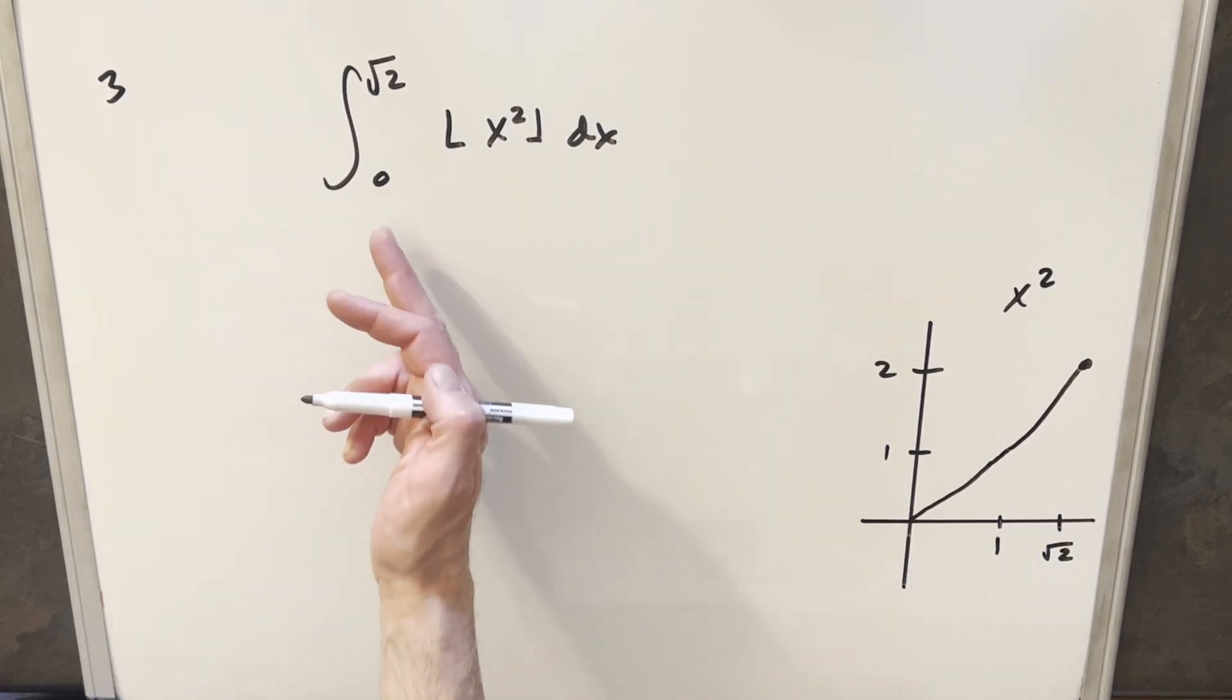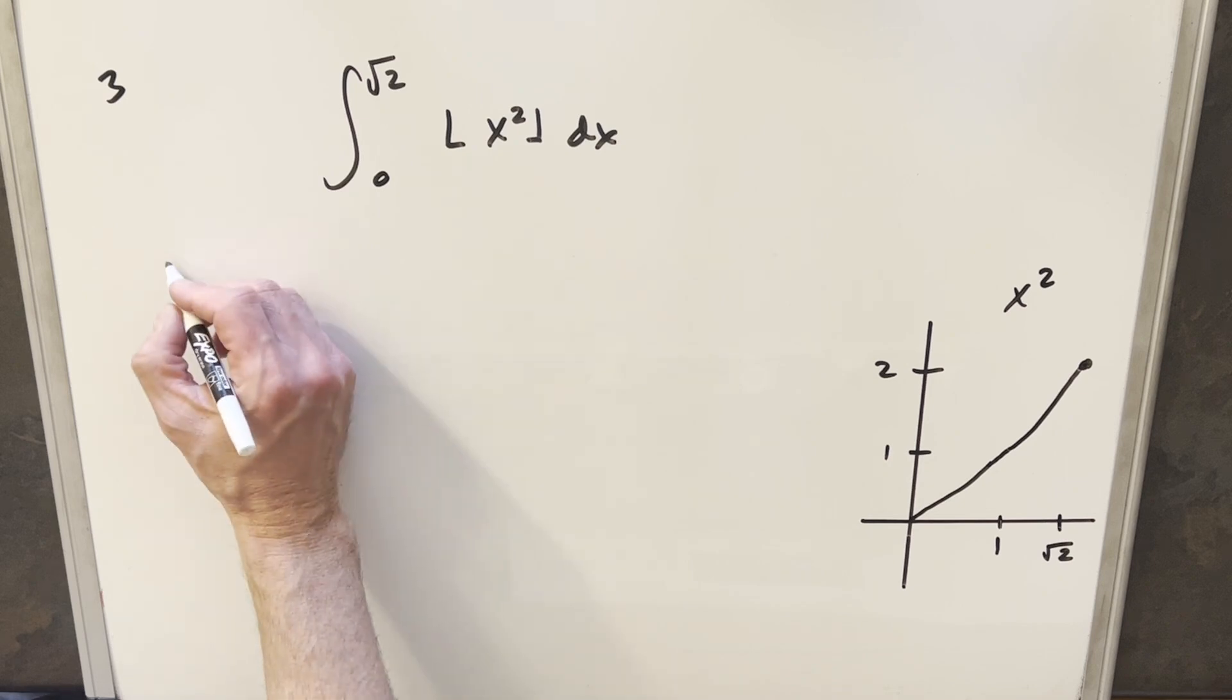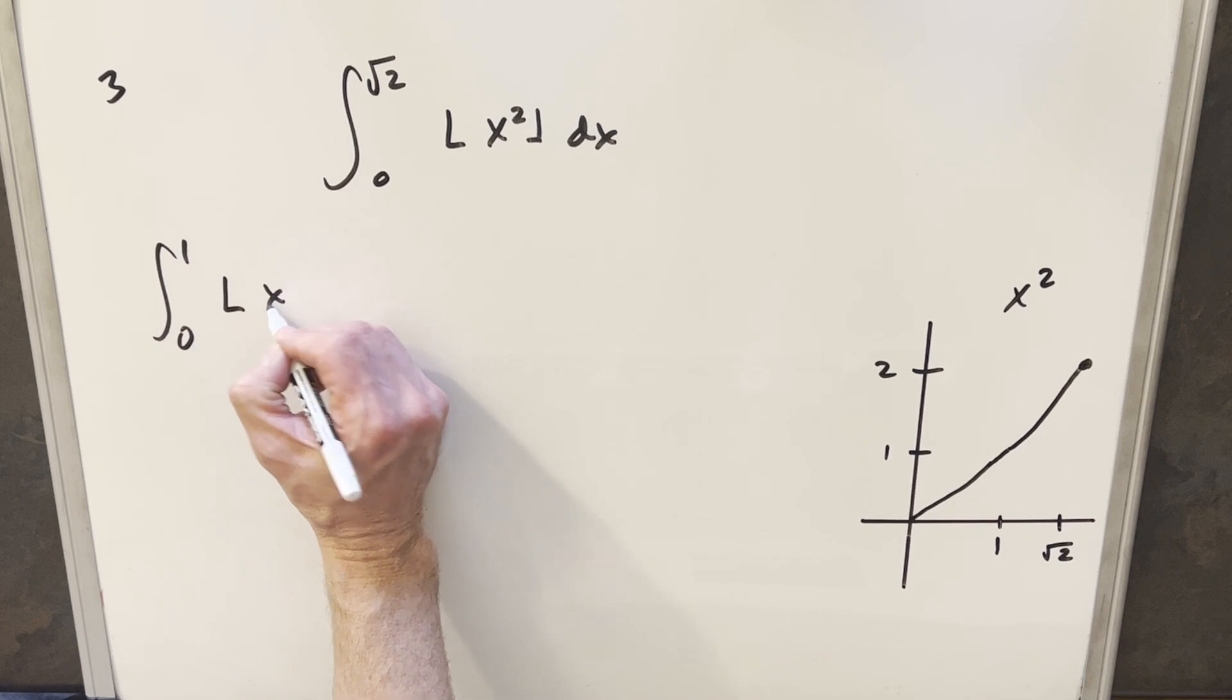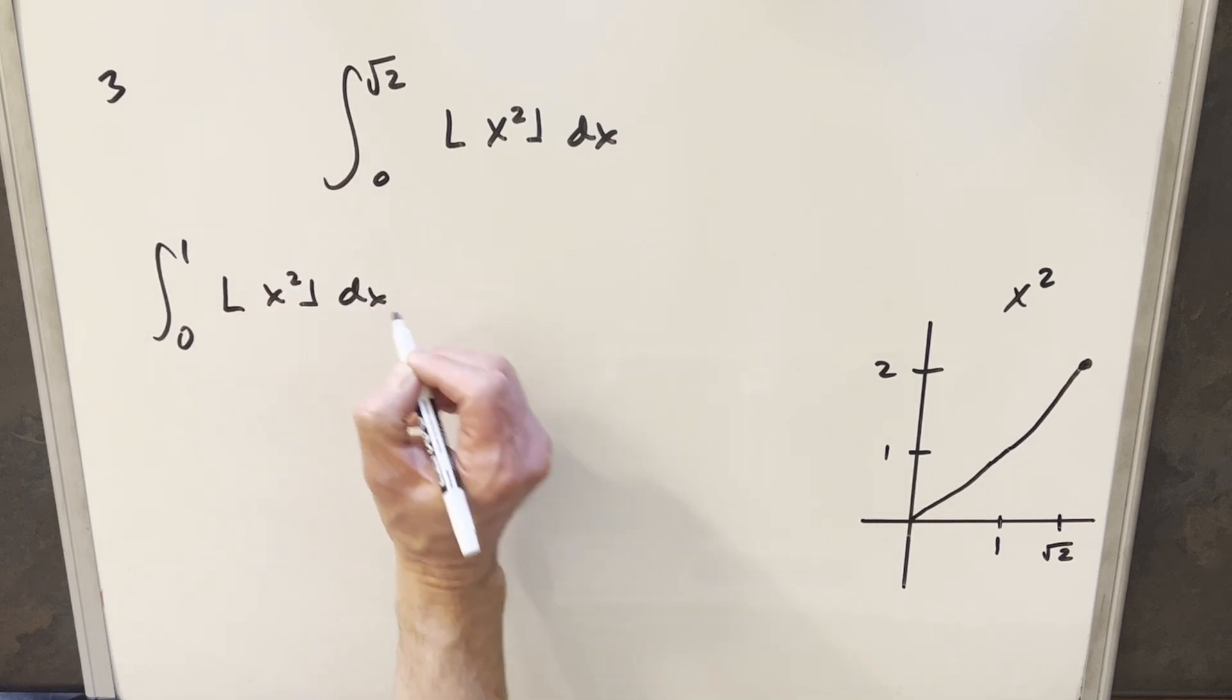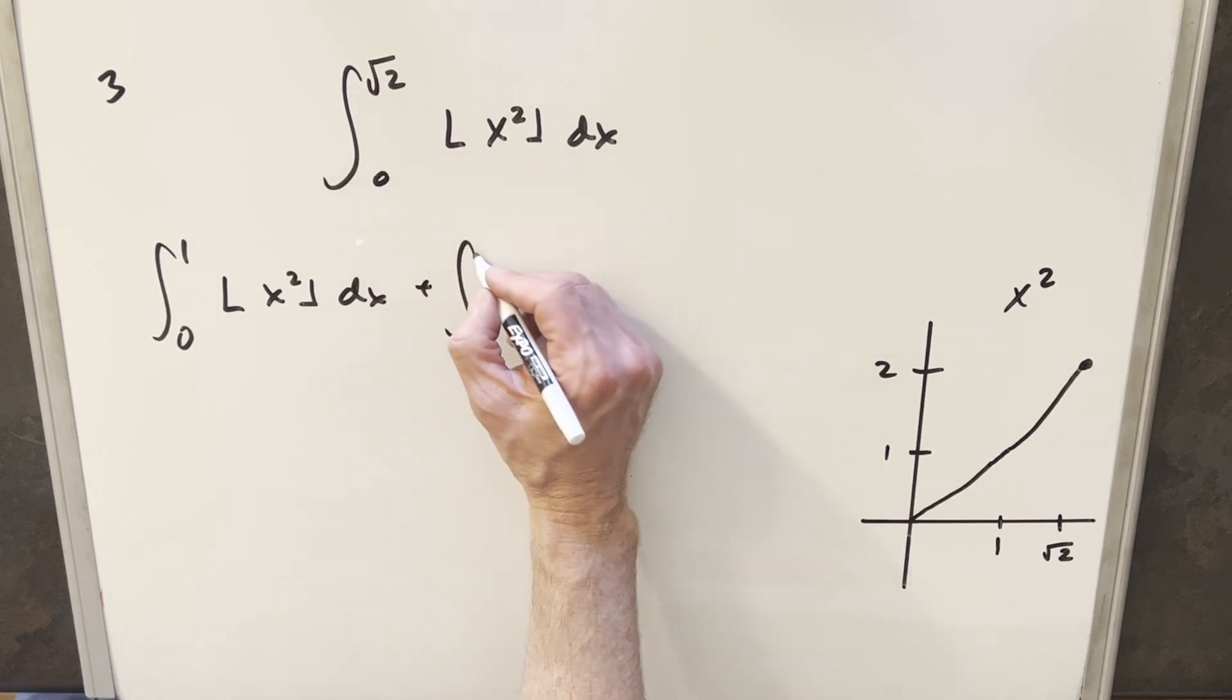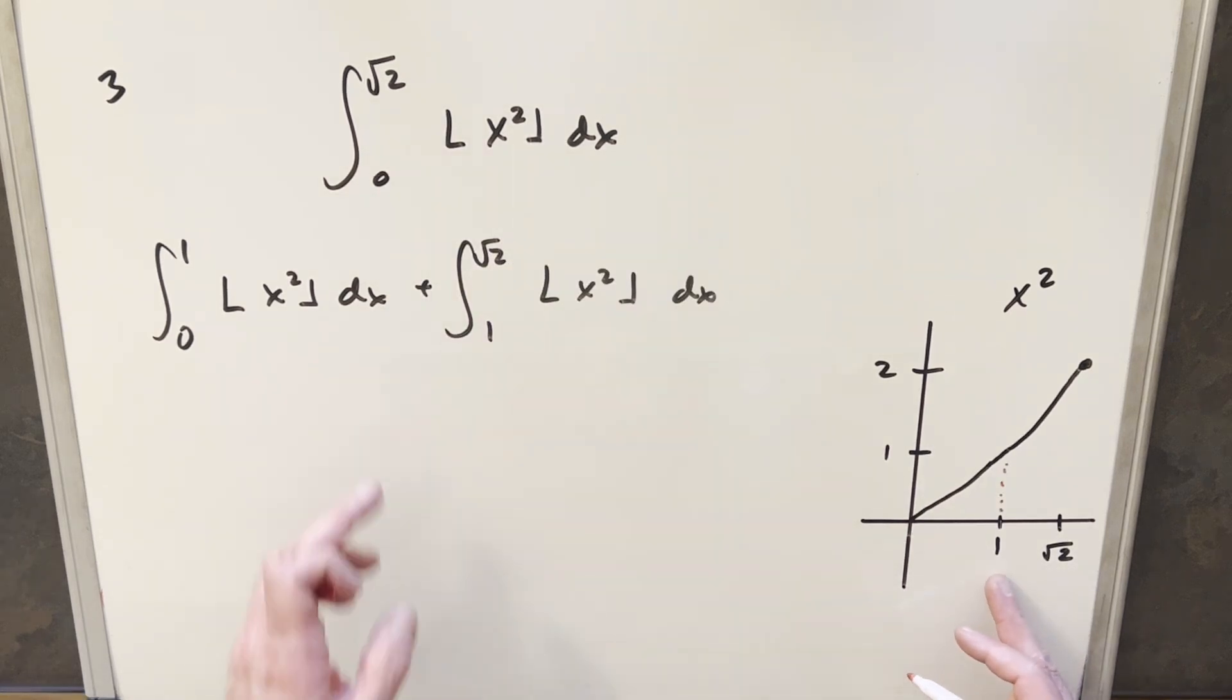Now what will help a lot of times with the floor function is if we can break up our integral. So what I'm going to do is break this. We'll have our first integral from 0 to 1, and then for the second one, we'll integrate from 1 to our upper bound square root of 2. So what we've done is split our integral right here on the 1 value, and we'll evaluate these separately.